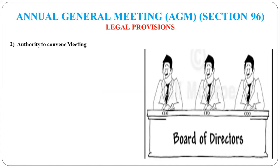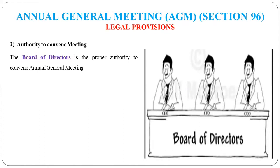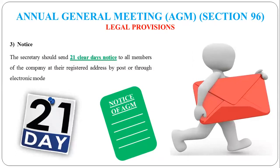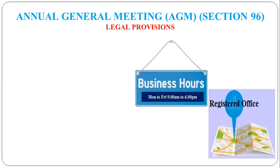The second legal provision is authority to convene the meeting - 'convene' means to call a meeting. The authority to call the Annual General Meeting rests with the Board of Directors. The third provision is notice - the Annual General Meeting notice must be sent by the secretary to every member 21 days in advance. This notice can be sent to the member's registered address by post, or nowadays by electronic mode such as email.